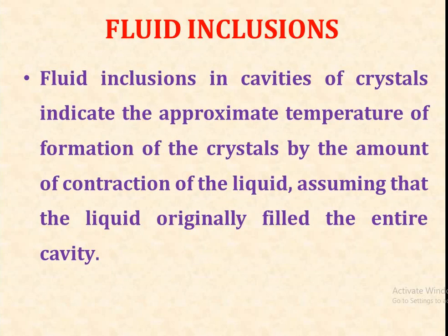Next is fluid inclusion, which we have already discussed in detail. Fluid inclusions in cavities of crystals indicate the approximate temperature of formation of the crystal by the amount of contraction of the liquid, assuming that the liquid originally filled the entire cavity. These are some of the methods by which geological thermometers can be determined and yield information about formation temperatures.